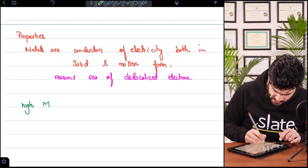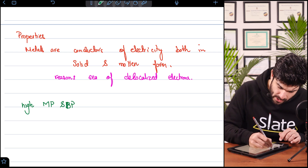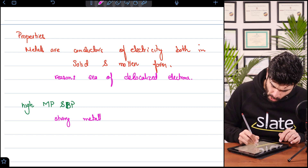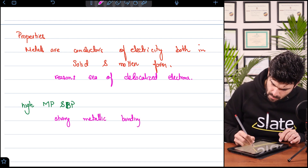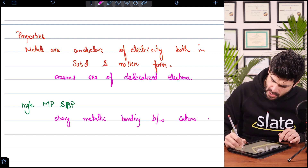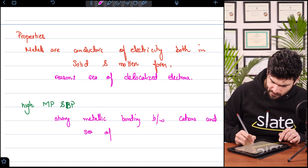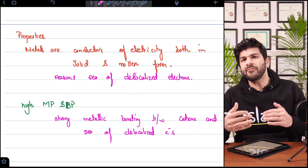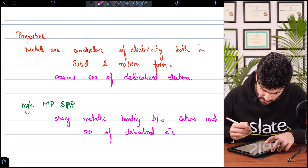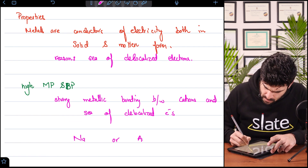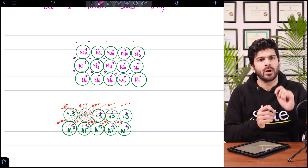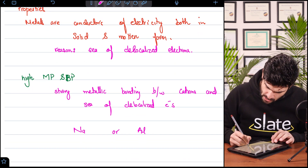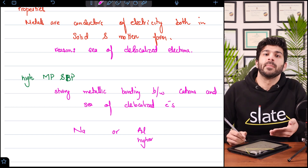High melting and boiling point. Why? Because of strong metallic bonding between the cation and the sea of delocalized electrons. Which will have a higher melting and boiling point — sodium or aluminum? Sodium gives one electron each, while aluminum gives out three electrons each. So obviously aluminum will have a higher melting and boiling point because it has stronger metallic bonding.